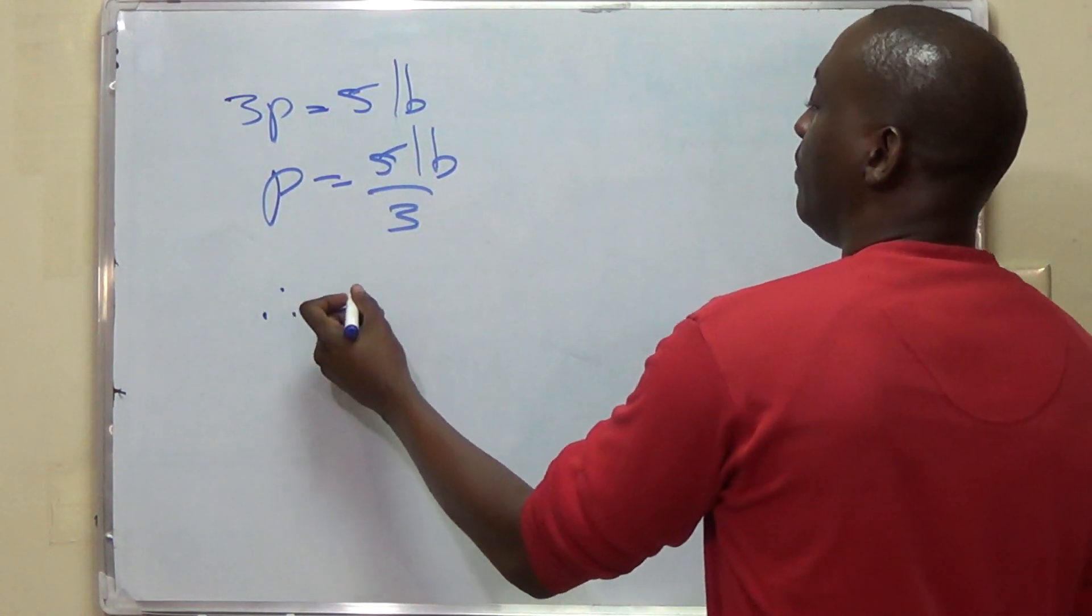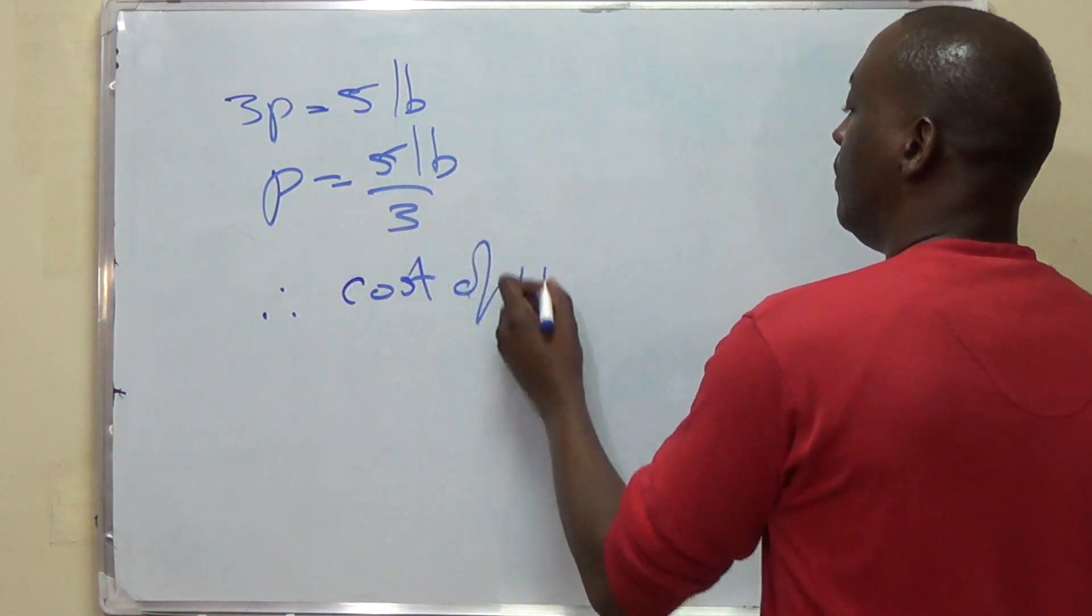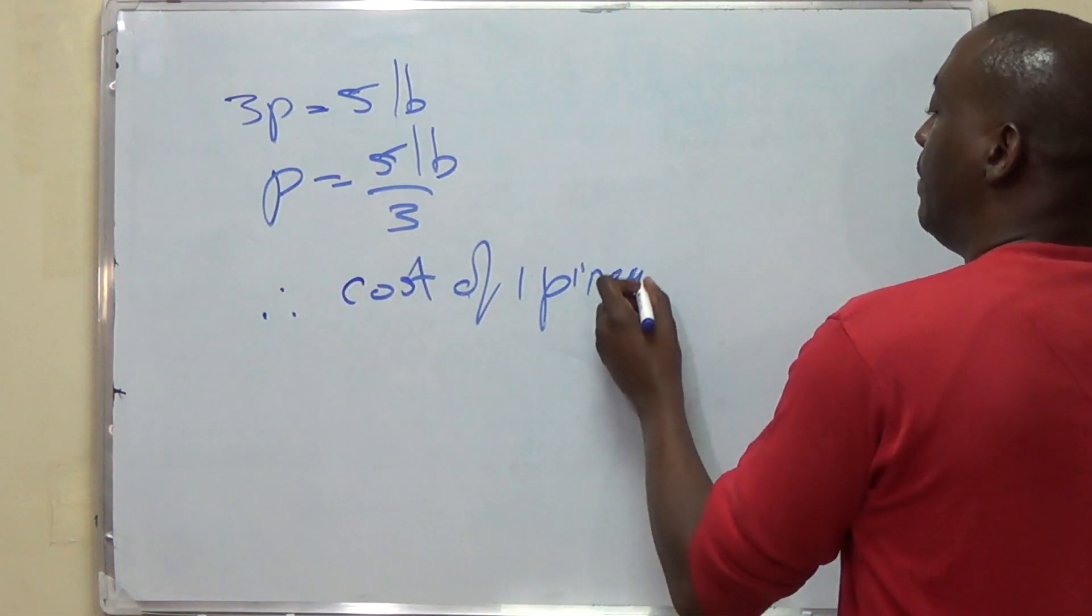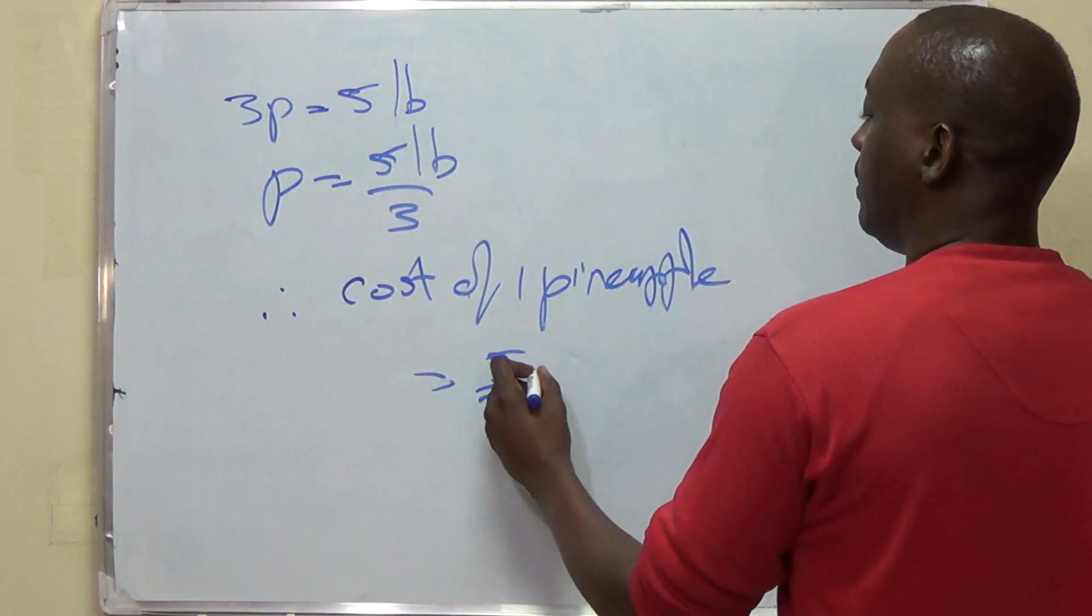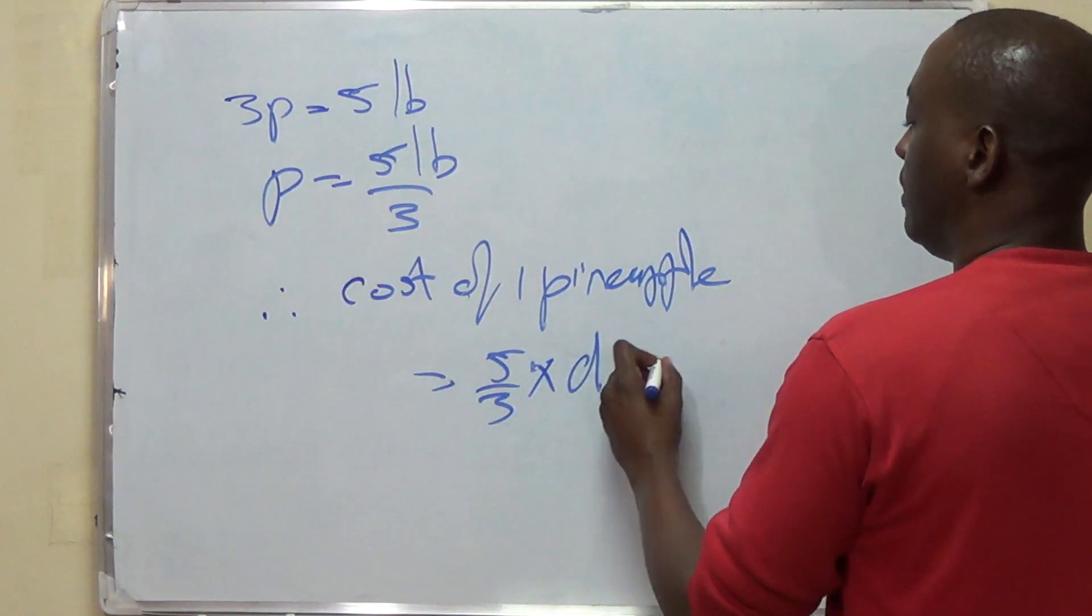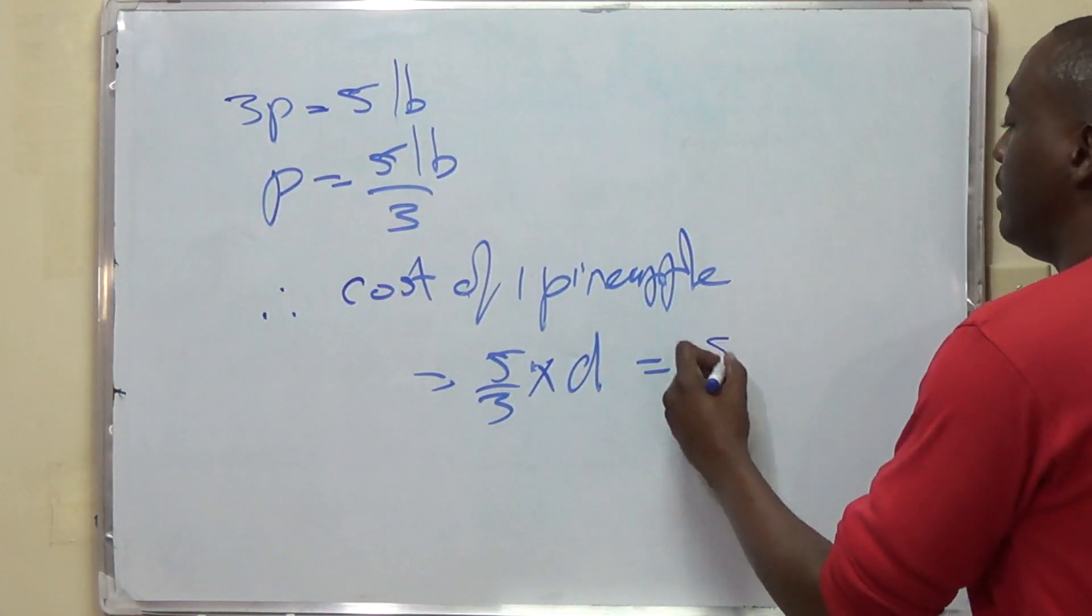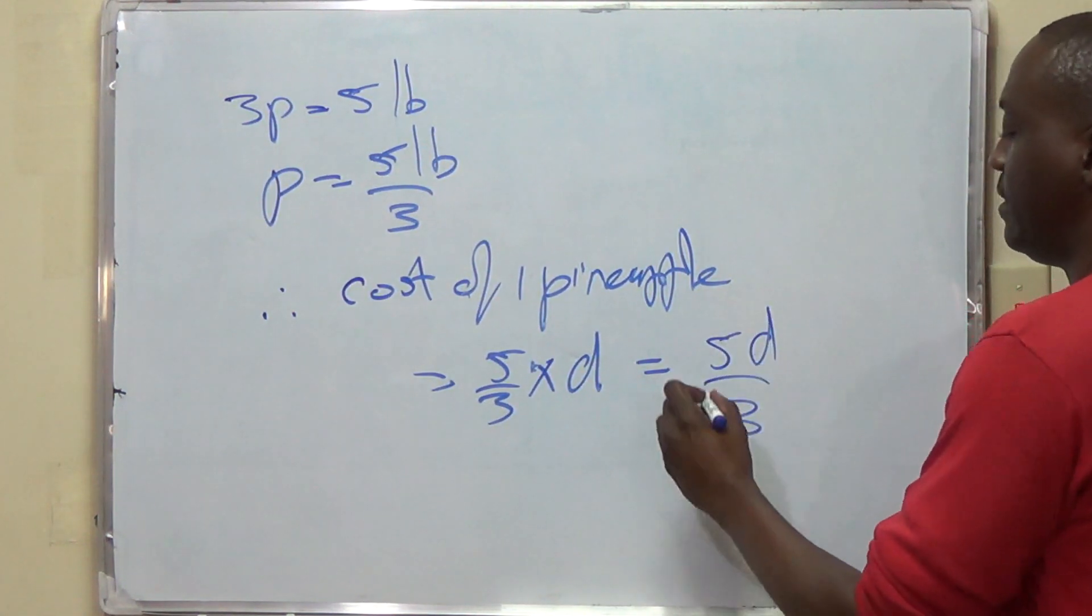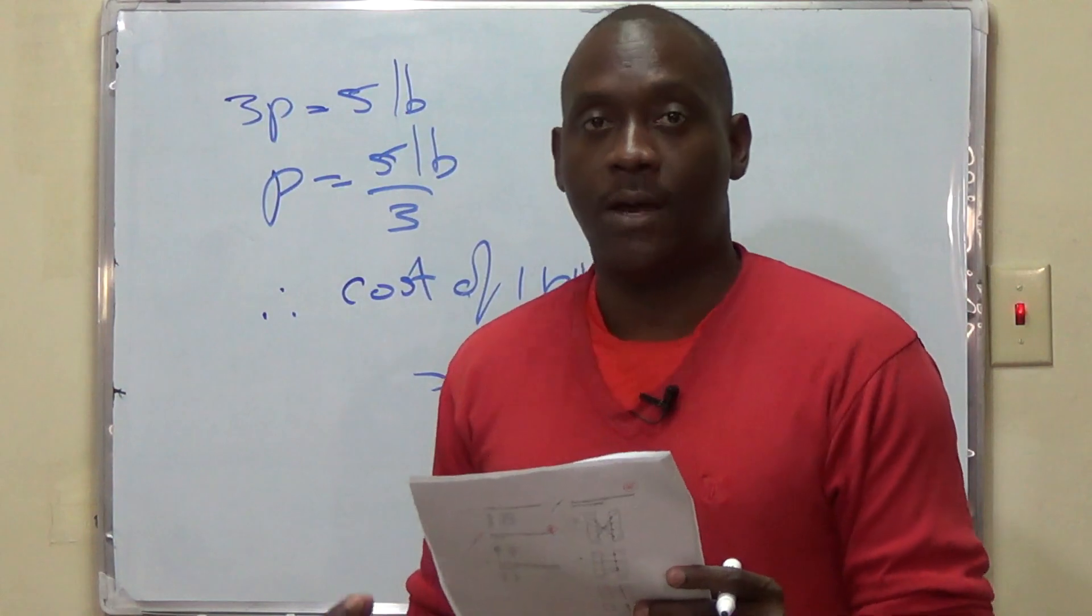So, we can say now, therefore, the cost of 1 pineapple is equal to 5 over 3 multiplied by D, which expressed more sophisticatedly, would be 5D over 3, which in this case would be answer B.